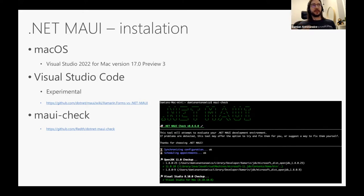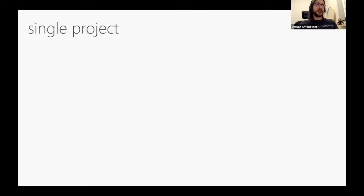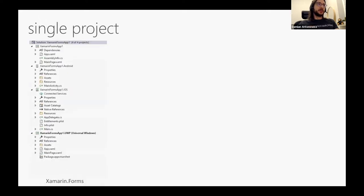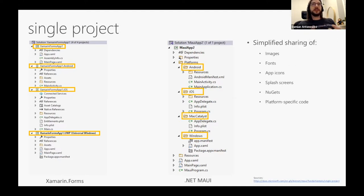What's new and exciting about .NET MAUI? First of all, there will be a single project. Let's look at how the project structure looks in Xamarin Forms: if you create a Xamarin Forms application, your solution will have separate projects for Android, iOS, and Windows, plus a shared project with your XAML views and shared code. .NET MAUI changes this — there will be only one project, with platform-specific folders for Android, iOS, Mac, and Windows. Thanks to single project, it will be easier to share images, fonts, icons, splash screens, NuGets, and platform-specific code.